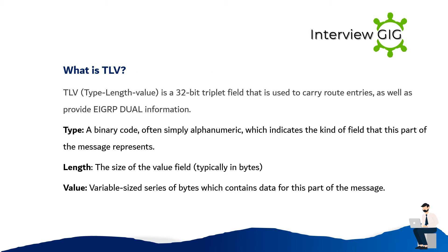What is TLV? TLV is a 32-bit triplet field used to carry route entries as well as provide EIGRP DUAL information. Type: a binary code, often simply alphanumeric, which indicates the kind of field that this part of the message represents. Length: the size of the value field. Value: a variable-sized series of bytes which contains data for this part of the message.